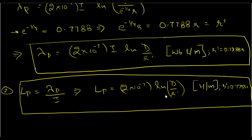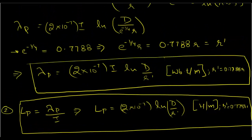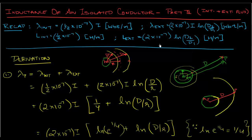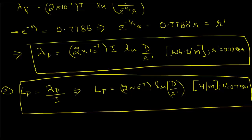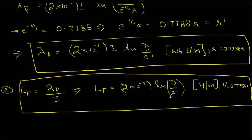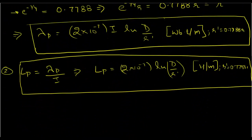If you observe, this equation is very similar to the equation for external flux linkages: 2 times 10 to the power minus 7 times ln of d over r prime. Although we've combined internal and external values, the end result looks identical to the external-only formula. What has happened is that to account for internal flux, the effective radius has been reduced to 0.7788 of the original radius. By doing that we account for all the internal flux.